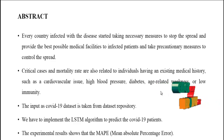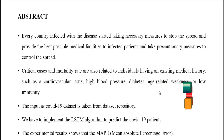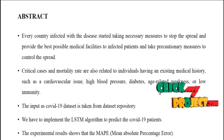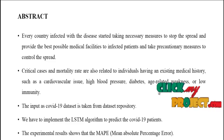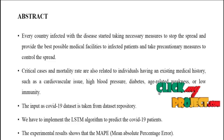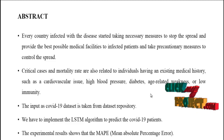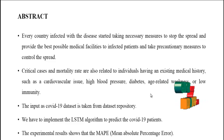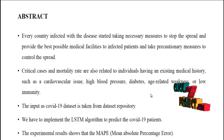Now we are going to see the overview of our process. COVID-19 disease — every country infected with this disease started taking necessary measures to stop the spread and provide the best possible medical facilities to infected patients, and take precautionary measures to control the spread. Critical cases and mortality rate are also related to individuals having an existing medical history such as cardiovascular issues, high blood pressure, diabetes, age-related weakness, or low immunity. The main objective of our process is to predict COVID-19 positive patients by using the Long Short-Term Memory algorithm. This is a time series dataset, so we have to implement the LSTM algorithm.